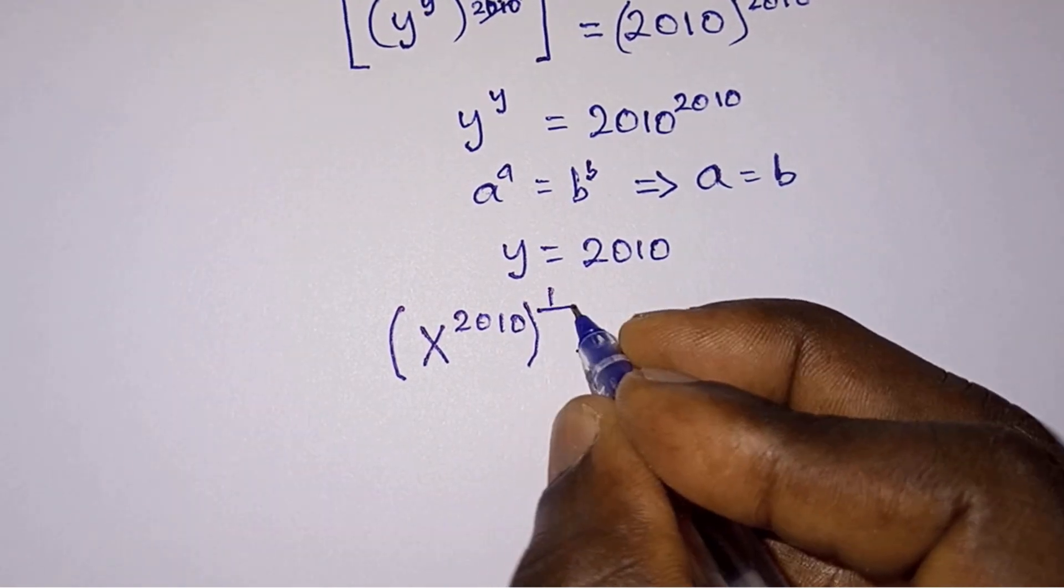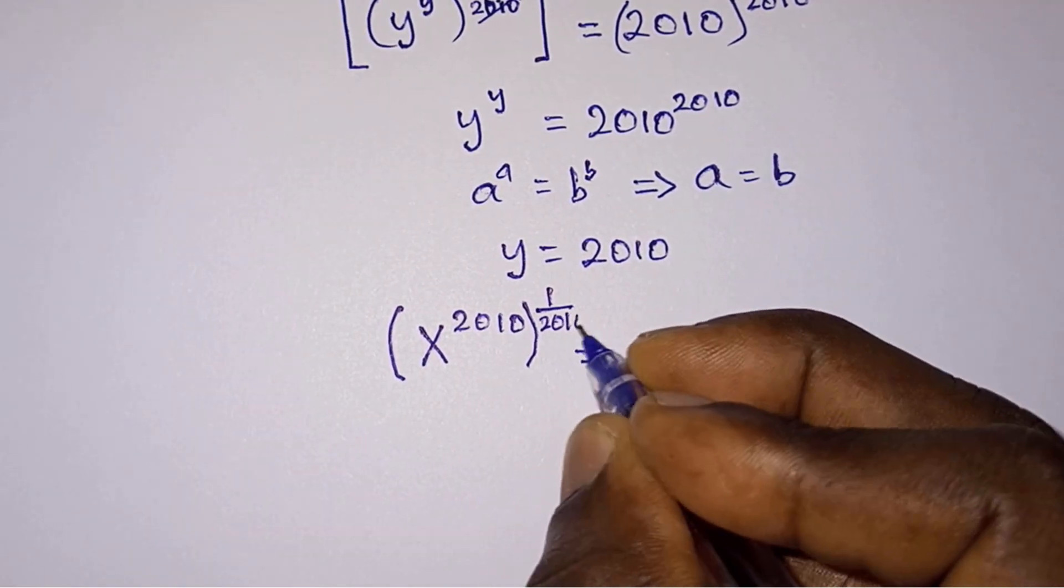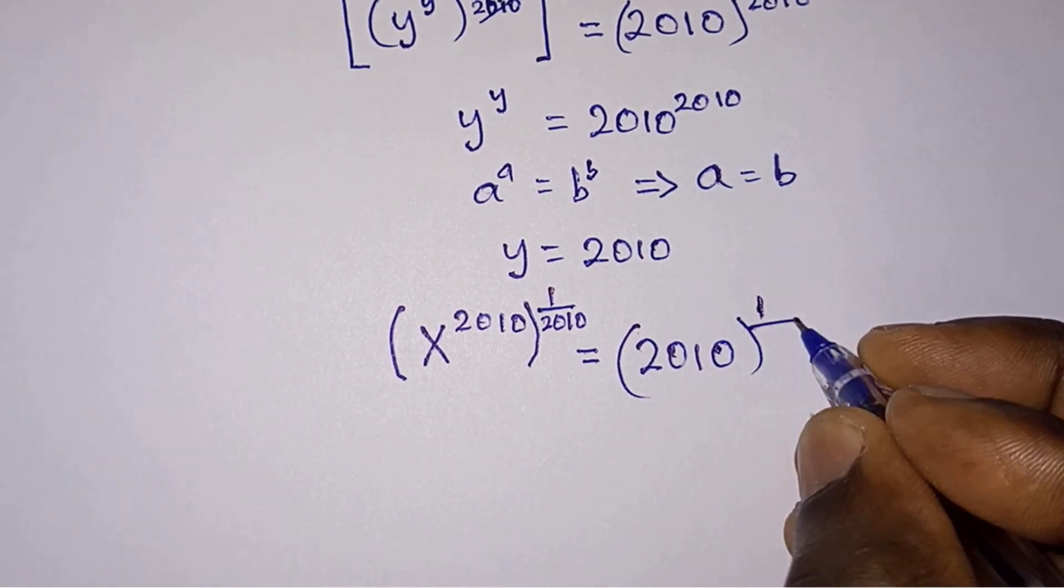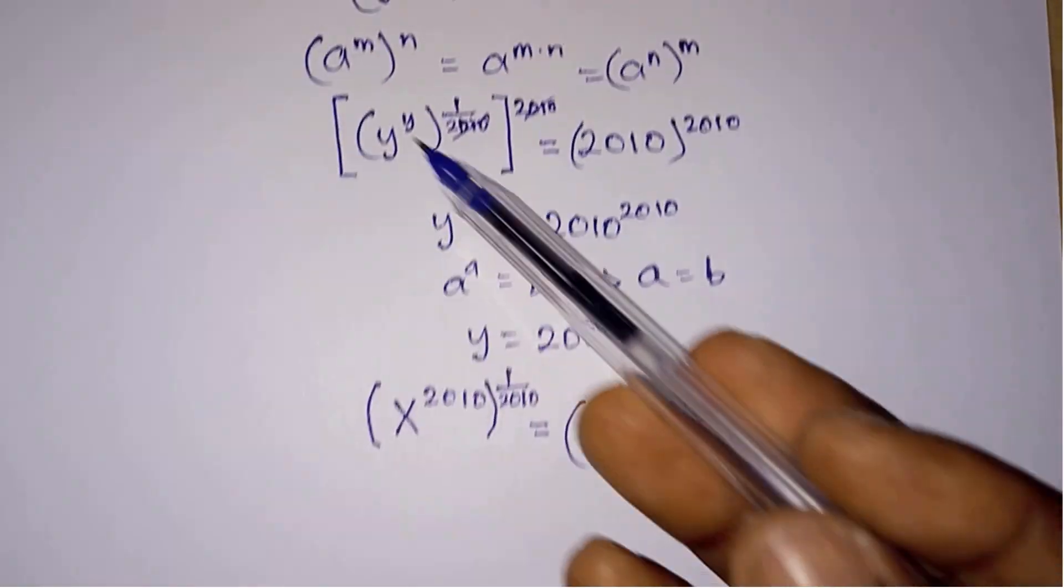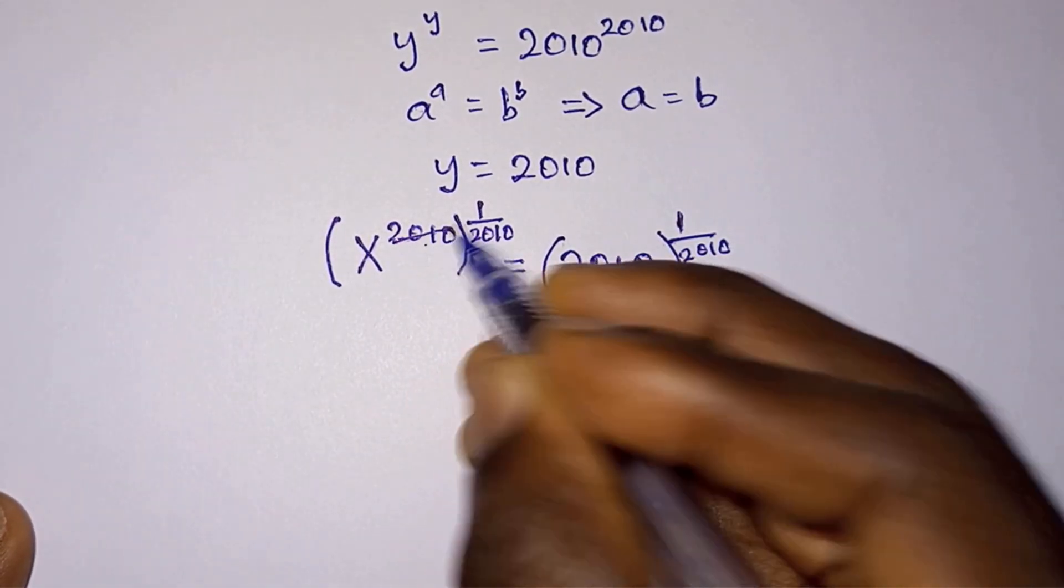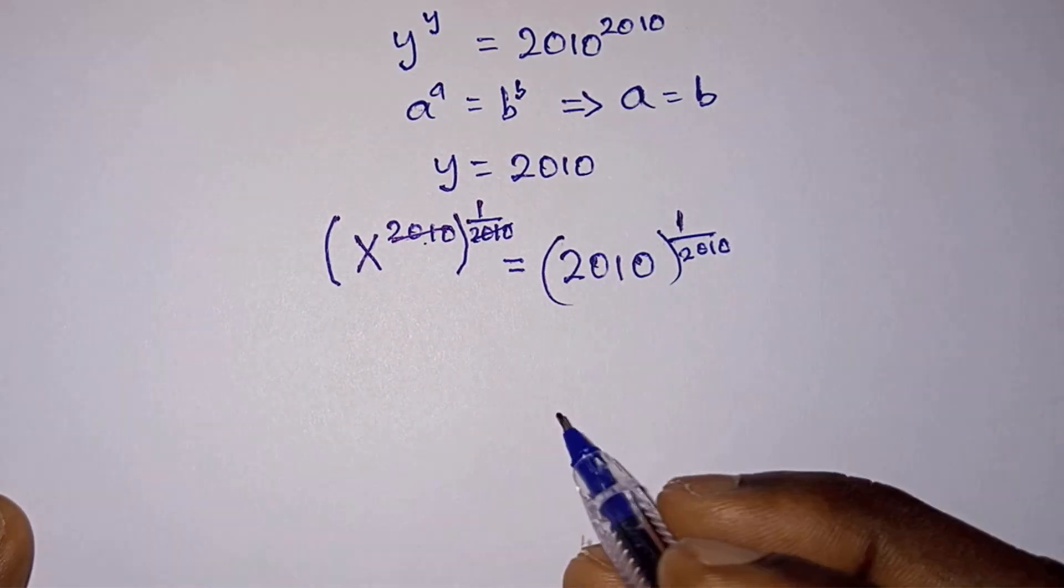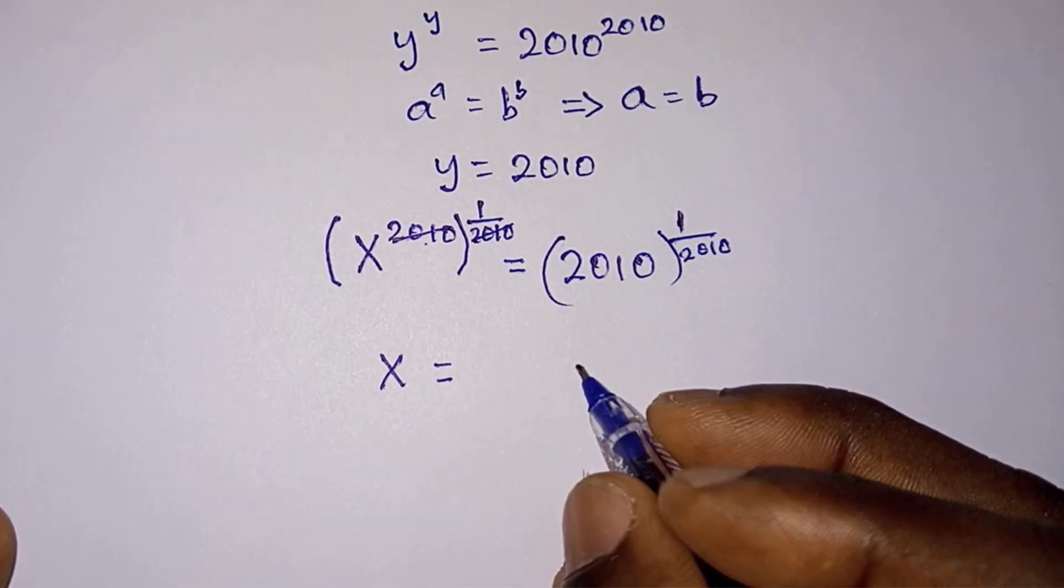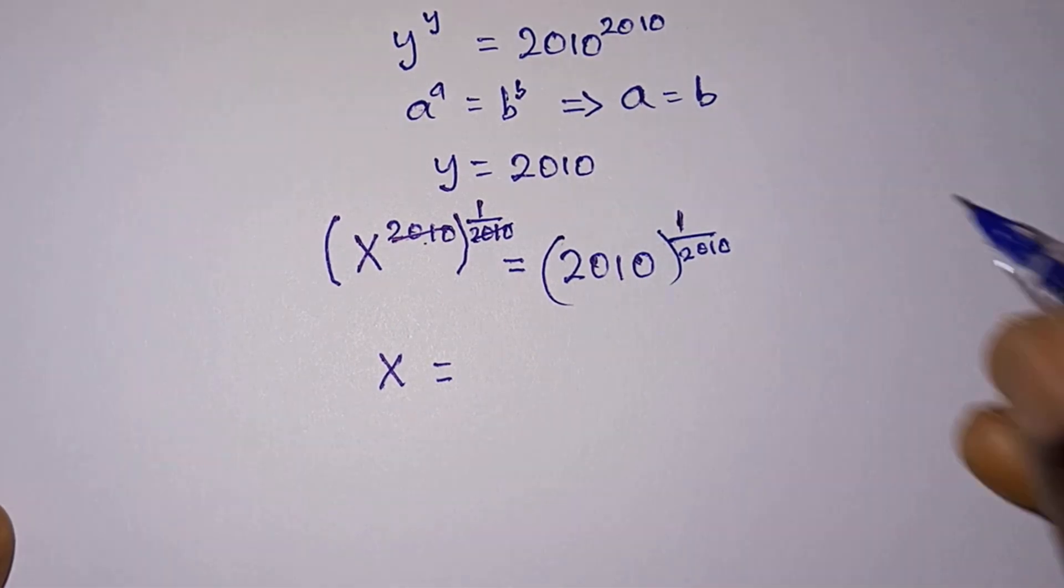We are looking for x, so we will raise each side of this equation to the power 1 over 2010, so that from this rule we can multiply this 2010 by this, so this 2010 will cancel this 2010.